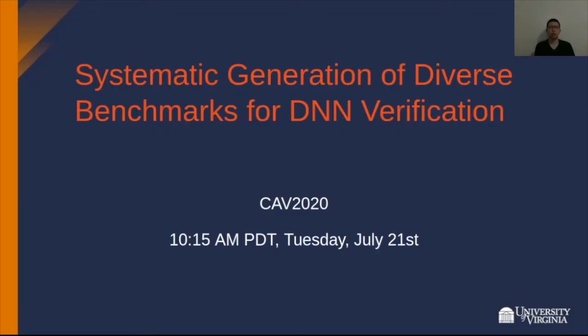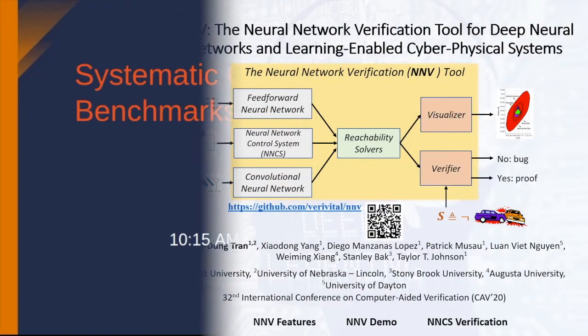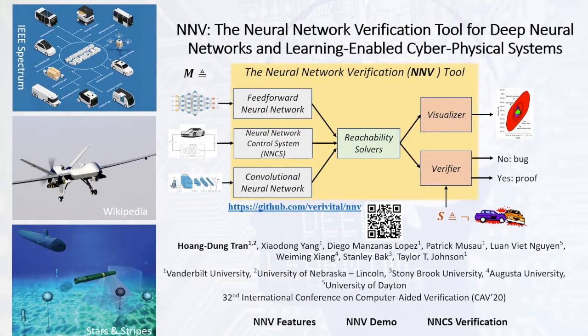Deep neural networks have been increasingly used in safety-critical applications like self-driving cars, autonomous aircraft, and unmanned underwater vehicles. In such applications, failures of deep neural network components can cause the loss of human lives and money. Therefore, there is an urgent need for tools and methods that can formally verify the safety and robustness of deep neural networks, as well as neural network-based control systems where the networks interact with the physical world.